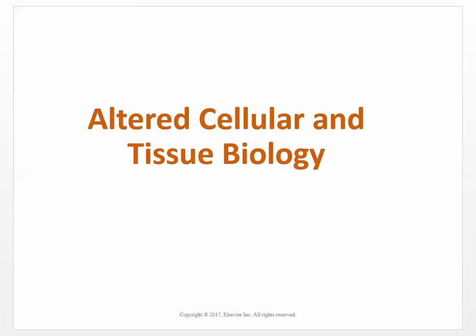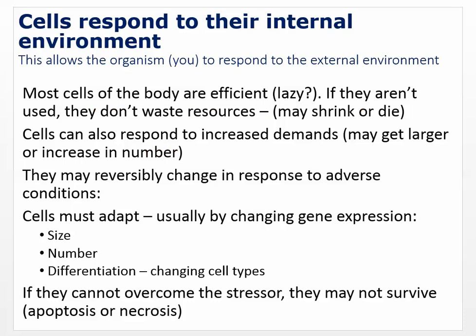We're going to get into altered cellular and tissue biology — the pathophysiology of cells and the changes that can happen to them, like hypertrophy, atrophy, the plasias, dysplasia, neoplasia, and those kinds of things. We'll also talk about necrosis, gangrene, and apoptosis. What we're dealing with here is how cells respond when they have different nutritional exposure.